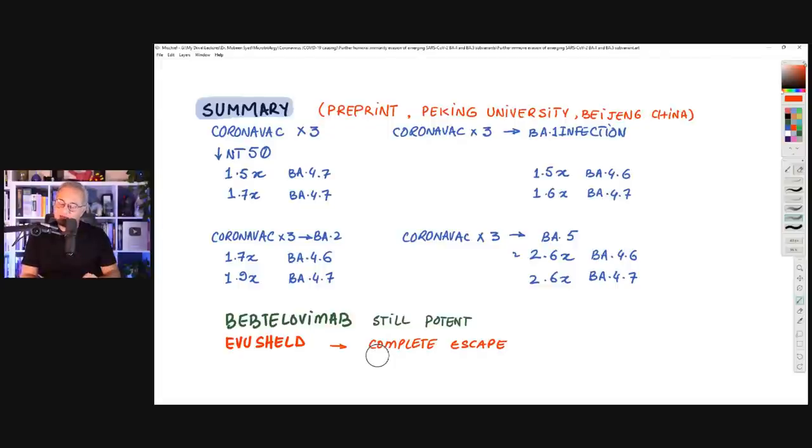Another scary thing is that BA.5 based, if somebody had CoronaVac, then had BA.5, the escape from their antibodies of BA.4.6 is more than BA.1 or BA.2 or just the vaccine. That's interesting.